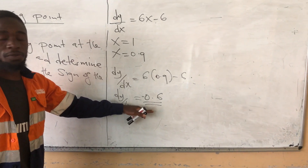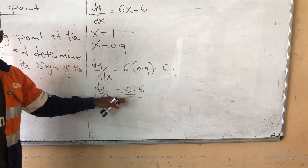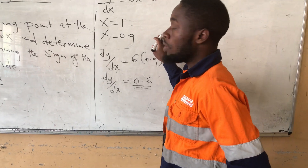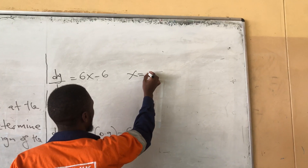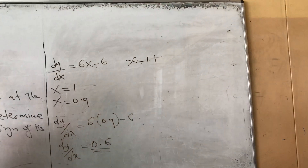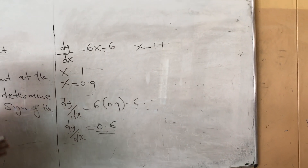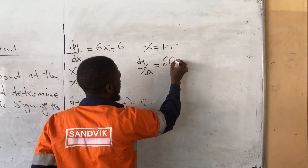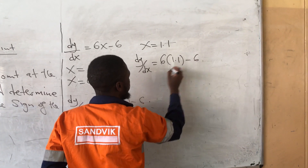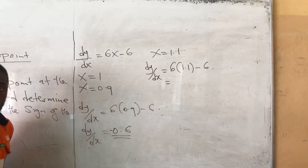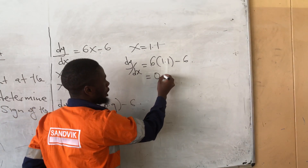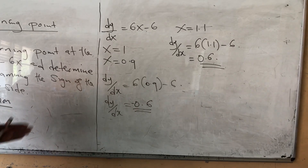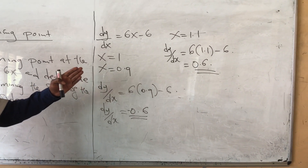Now let's see what happens when x is just greater than 1. Let's say x equals 1.1. Then dy/dx equals 6 times 1.1 minus 6, which gives 0.6, a positive value. So when x is just less than 1, dy/dx is negative, and when x is just greater than 1, dy/dx is positive.